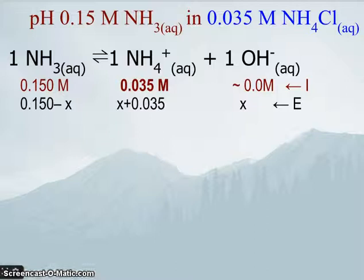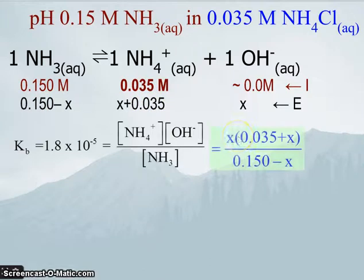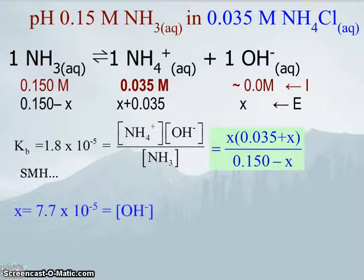So now we just work our same magic in terms of setting up our ICE line. It shifts to the right, but now it's not going to shift as much. Plug it into our Kb expression. Now our math is a little bit different. A small miracle happens. And we determine that x,